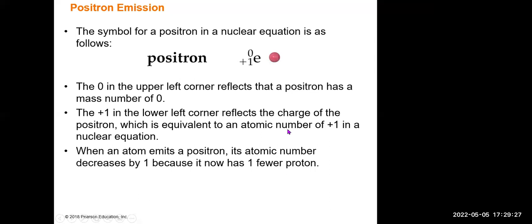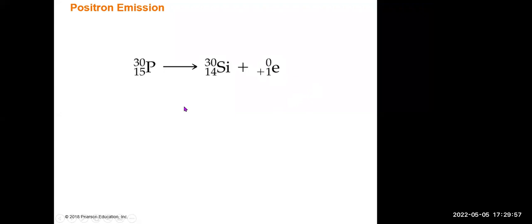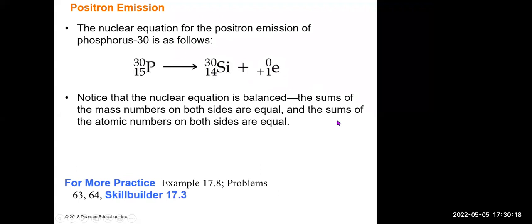When an atom emits a positron, the atomic number decreases by one because a proton has turned into a neutron and the positron is ejected. One example of a positron emission equation is phosphorus-30 producing silicon-30 plus a positron. Silicon has an atomic number one lower than phosphorus. You can verify that both the bottom numbers and top numbers are balanced.